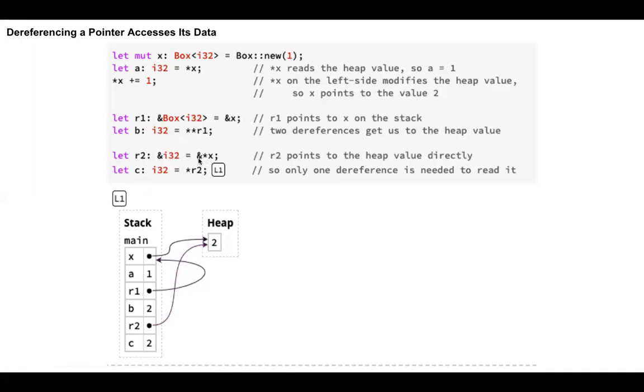Another way, reference pointing to whatever the value of x is. So see here, directly, R2 is pointing to the area of the heap where the value of x is stored. One more time. What you're doing is, star x means what? Star x is the value 2 in the heap. Ampersand means a reference to this area of the heap. So R2 is pointing to this area of the heap where the value of x is stored.